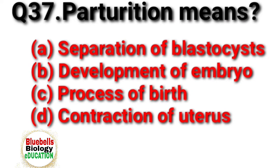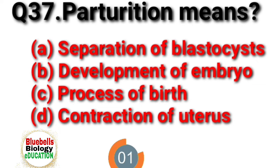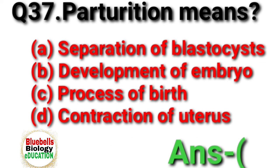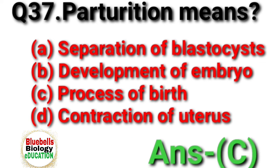Question 37. Parturition means. Option A: separation of blastocysts. B: development of embryo. C: process of birth. D: contraction of uterus. Answer is C.